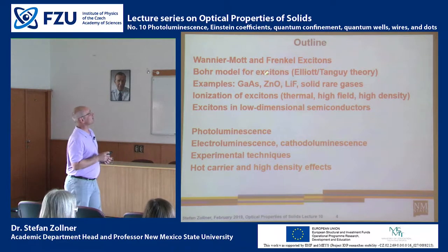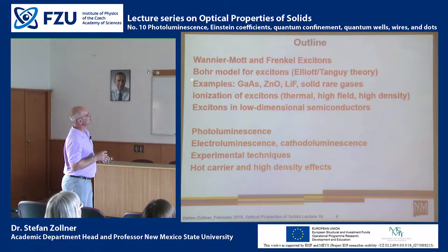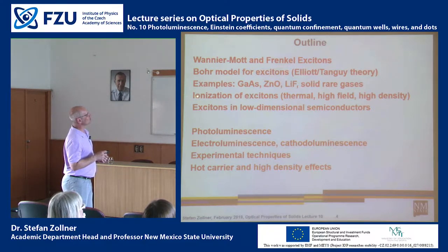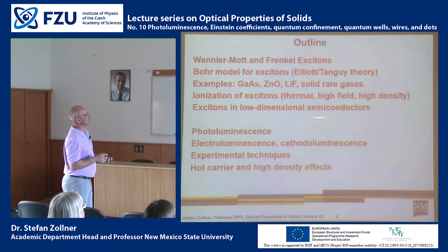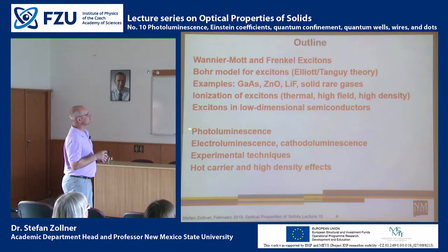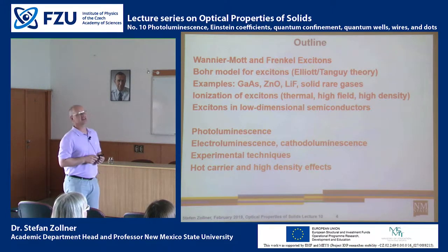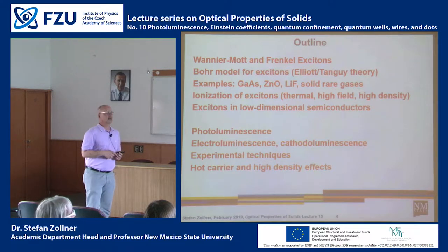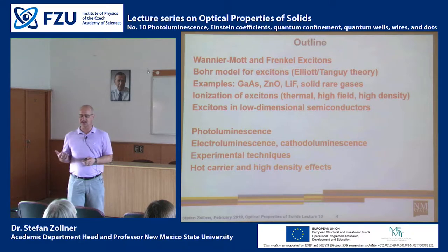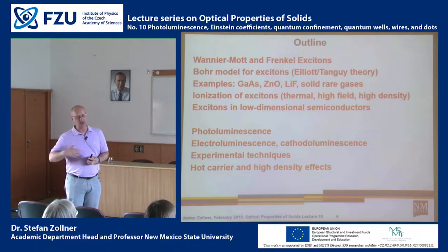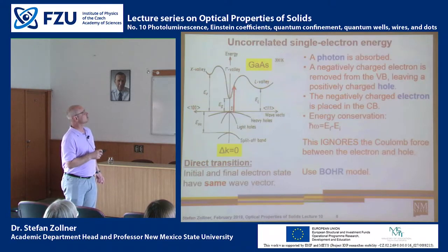Here's the outline: we'll talk about excitons — what is an exciton, examples, how to ionize it, and how excitons behave in low-dimensional structures. The second part of the lecture covers emission spectroscopies: photoluminescence, electroluminescence, related experimental techniques, hot carrier effects, and high density effects — meaning if you come in with a very intense pulse and create a lot of electron-hole pairs, how does that affect the spectra.